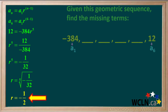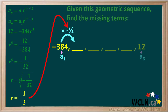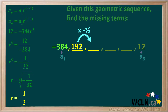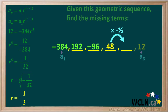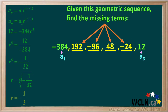You can check this by raising negative 1/2 to the fifth power, and it comes out to negative 1/32. To get term 2, we multiply term 1 by r, which is negative 1/2. Negative 384 times negative 1/2 gives us positive 192. 192 times negative 1/2 gives us negative 96. Negative 96 times negative 1/2 gives us positive 48. And positive 48 times negative 1/2 gives us negative 24.